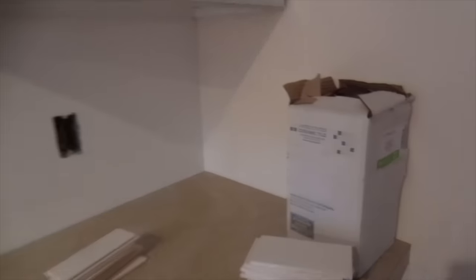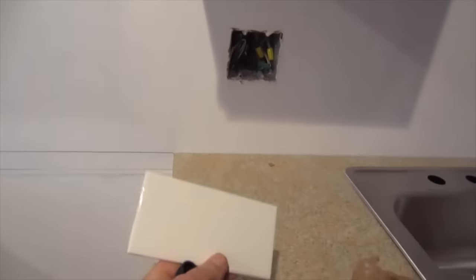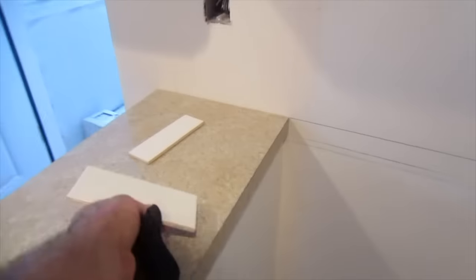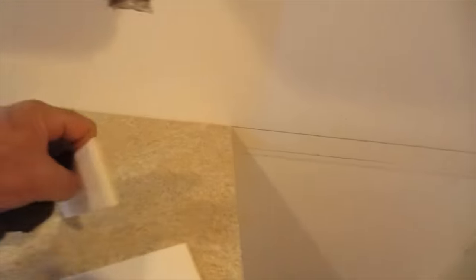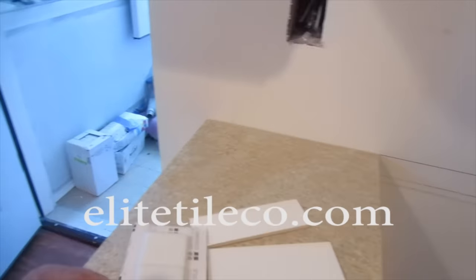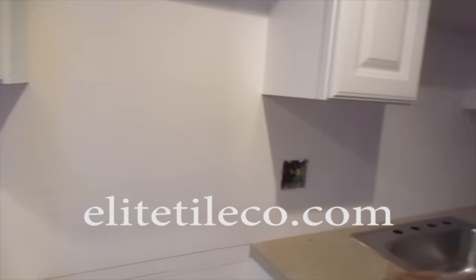Okay, so I have a very simple backsplash to do. It's a double tile, 3x6, with 4x6 bullnose and outside corners. So it's going to be a staggered joint. I'm just going to put it up with mastic. It's going to be real quick.